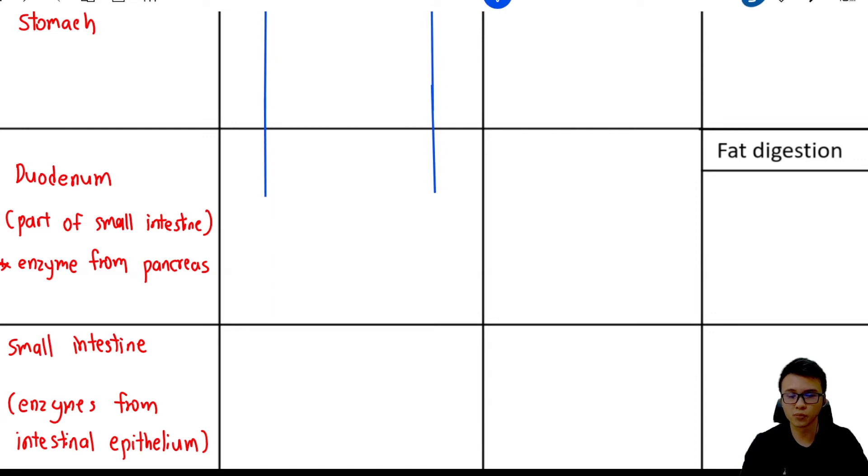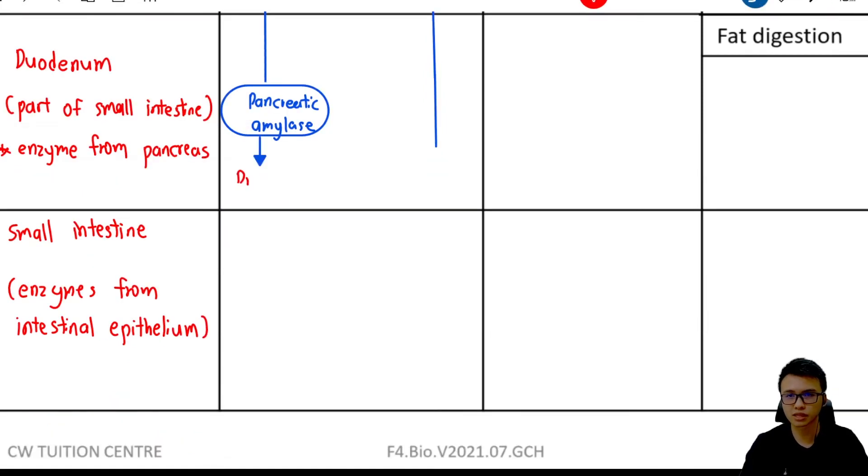Once they reach the duodenum, the smaller polysaccharides will be digested by pancreatic amylase, the enzyme that can be found in the pancreatic juice, into disaccharides, for example, maltose.